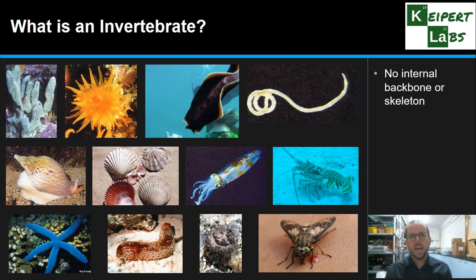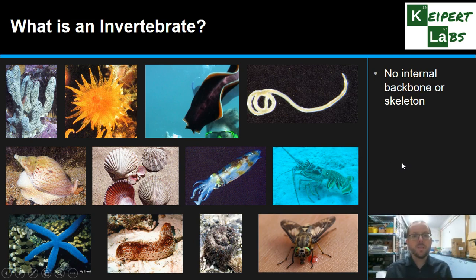When we're looking at an invertebrate, we're thinking about things that have no internal backbone or skeleton. All things that fit within that definition — you can see a wide range of them in the images on screen. For some there's no form of hard structure or backbone at all; for others it is an external exoskeleton instead.